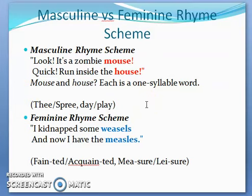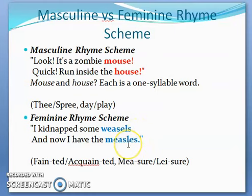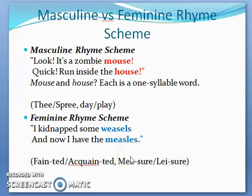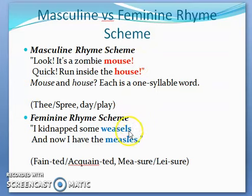In the feminine rhyme scheme, the lines end on multi-syllable words — longer words where the emphasis is not as strong, ending in a gliding way. Examples include 'weasels' and 'measles,' 'pleasure' and 'measure,' 'fainted' and 'acquainted.' The masculine rhyme scheme is more rigid, ending in an abrupt way with hard-sounding words, while in the feminine rhyme scheme the ending words are multi-syllabic — two or three syllables — with a glide when spoken.